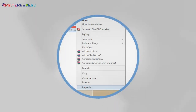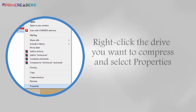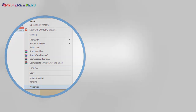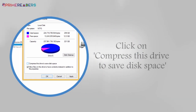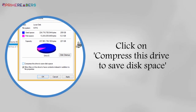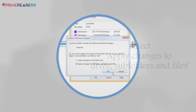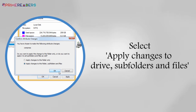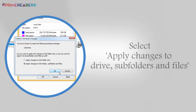To get started, right-click the file, folder, or drive you want to compress and select Properties. Click on the "Compress this drive to save disk space" checkbox, then click the Apply button. Select "Apply changes to drive, subfolders and files," then click OK.